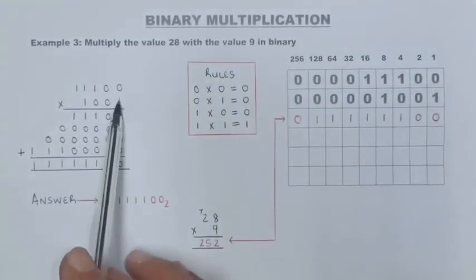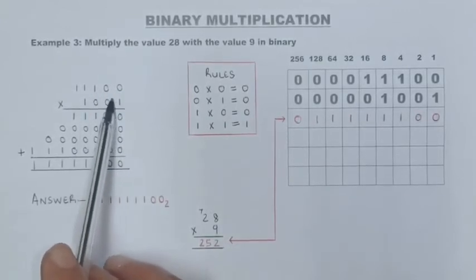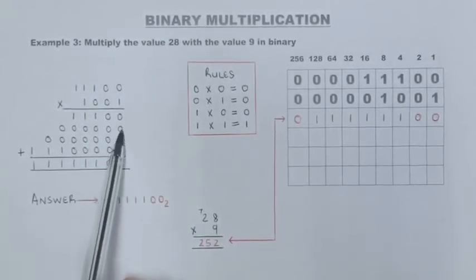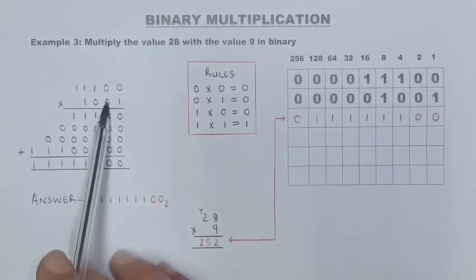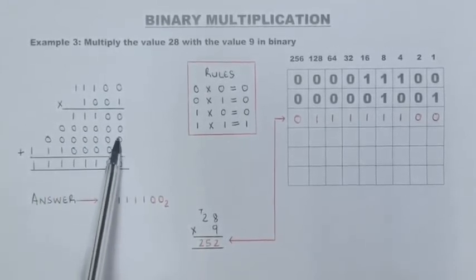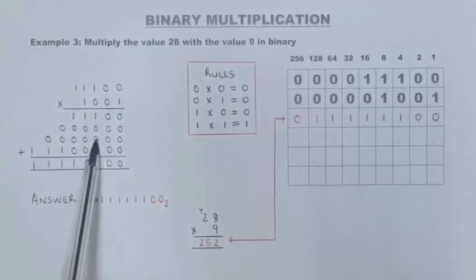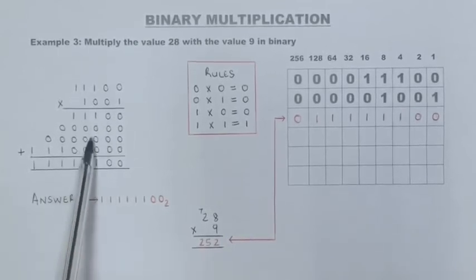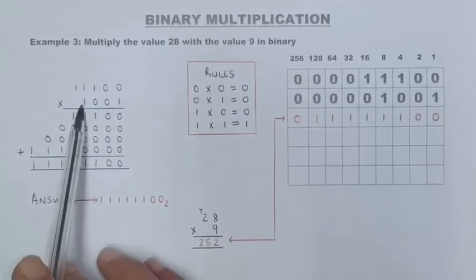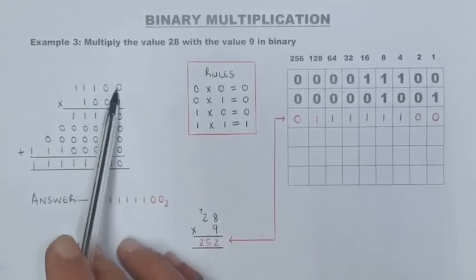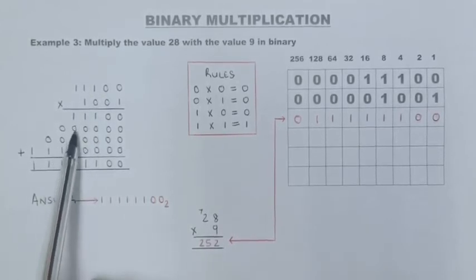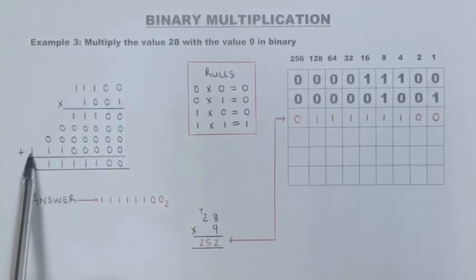So let's do this. One times zero is zero. One times zero is zero. One times one, one times one, and one times one gives three ones. Placeholder for the second column — anything multiplied by zero gives zeros there. Two placeholders for the third column starting with the third digit — that gives all zeros. Three placeholders for the fourth column: one times zero is zero, one times zero is zero, one times one is one, one times one is one, one times one is one.